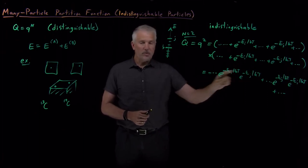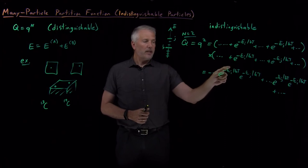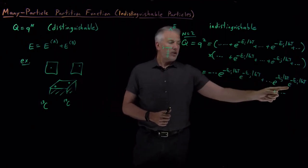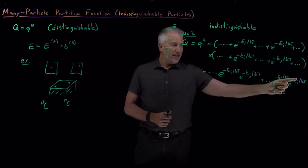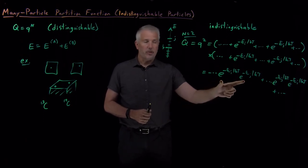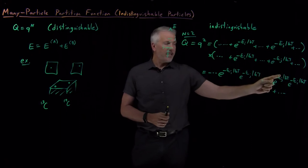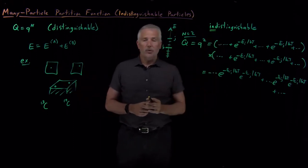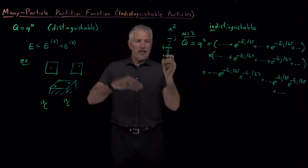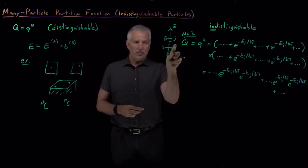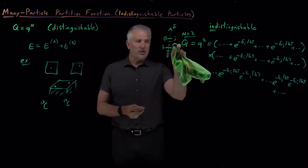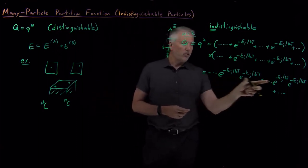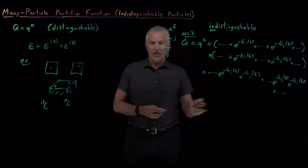If the particles are distinguishable, both those terms deserve to be in the partition function: one term says molecule A has energy εᵢ and molecule B has energy εⱼ, and the other says molecule A has energy εⱼ and molecule B has energy εᵢ — those are two different microstates. But if the particles are indistinguishable, we can't tell which molecule is in which state. All we know is that one molecule is in state i and one is in state j, so we've over-counted — those two terms represent the same microstate and we can't count them twice.